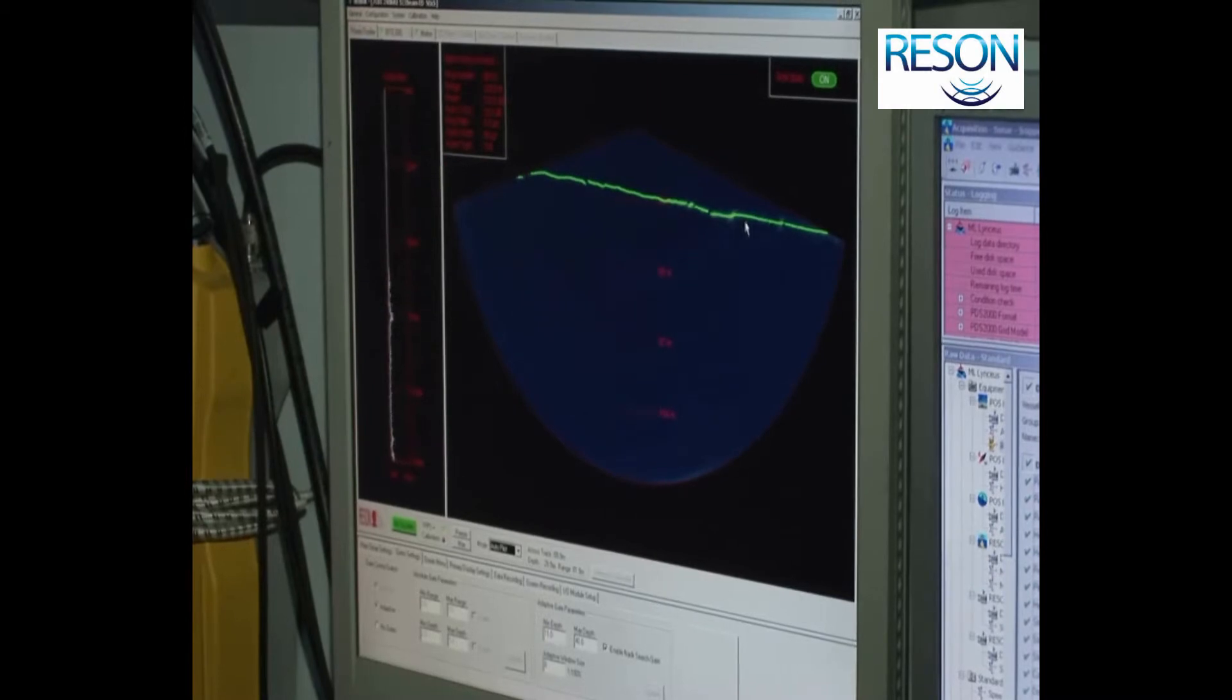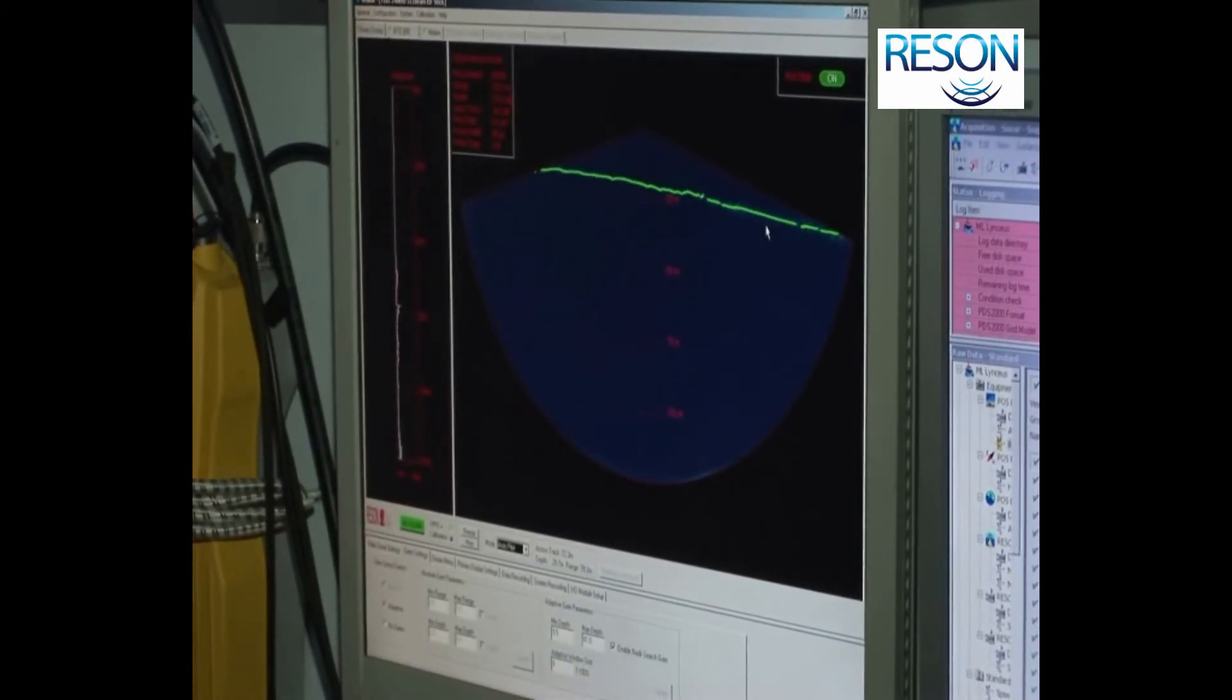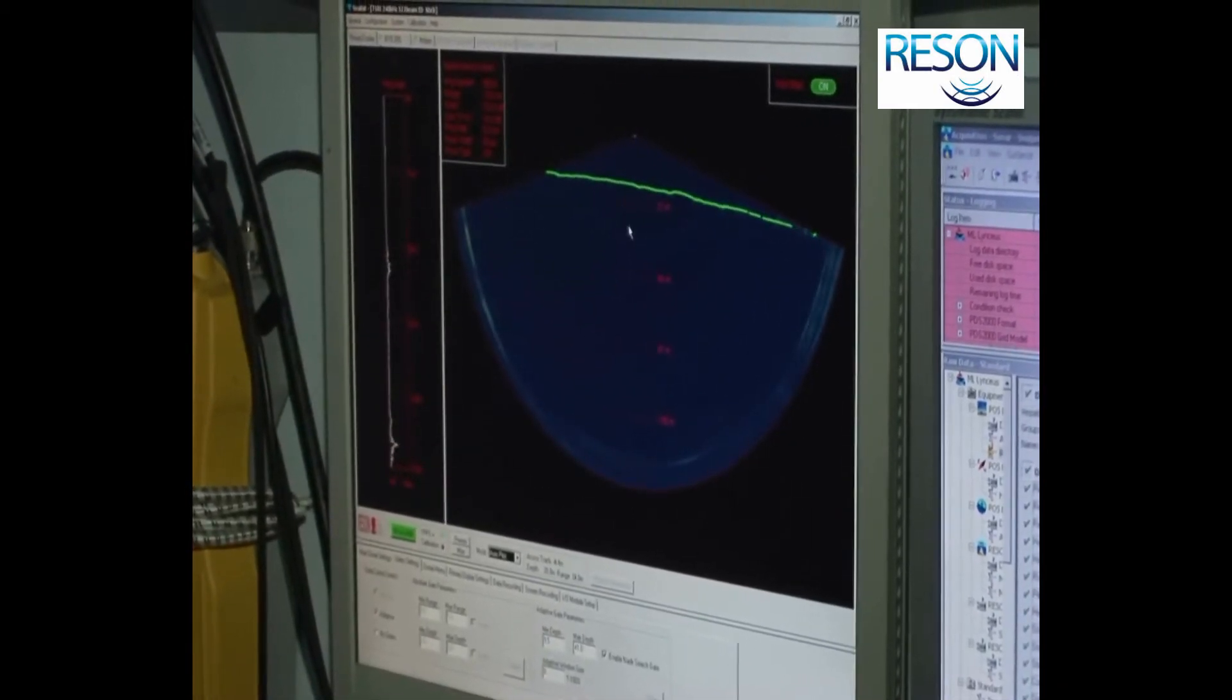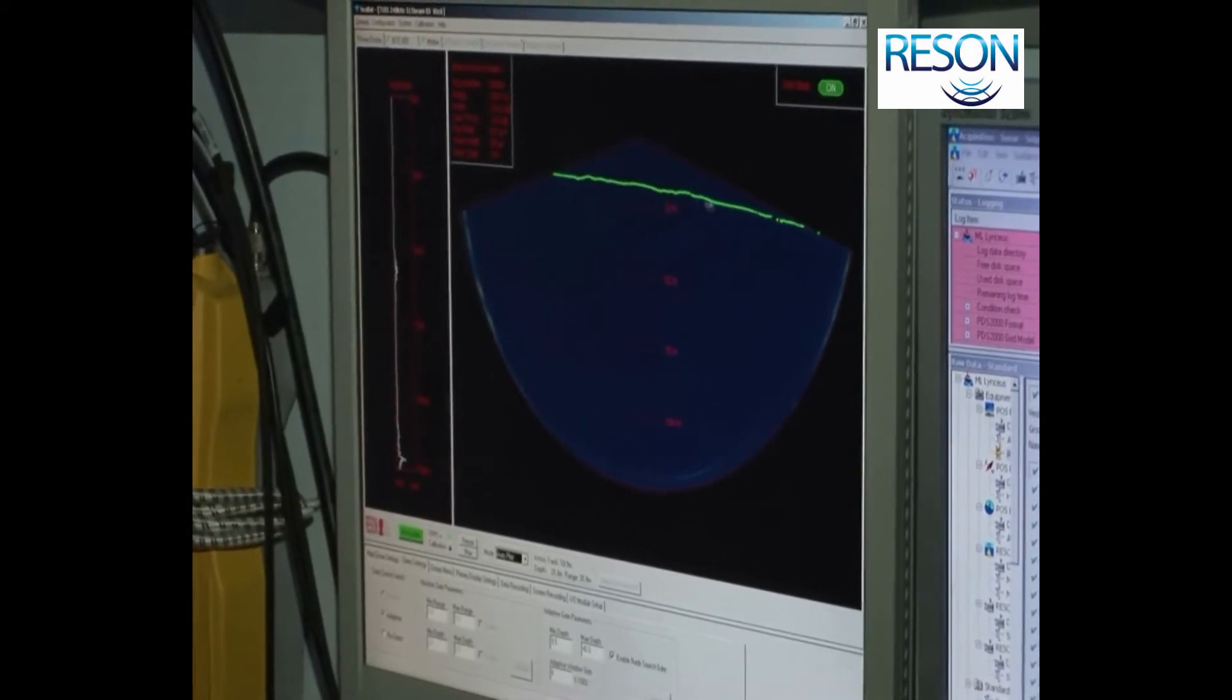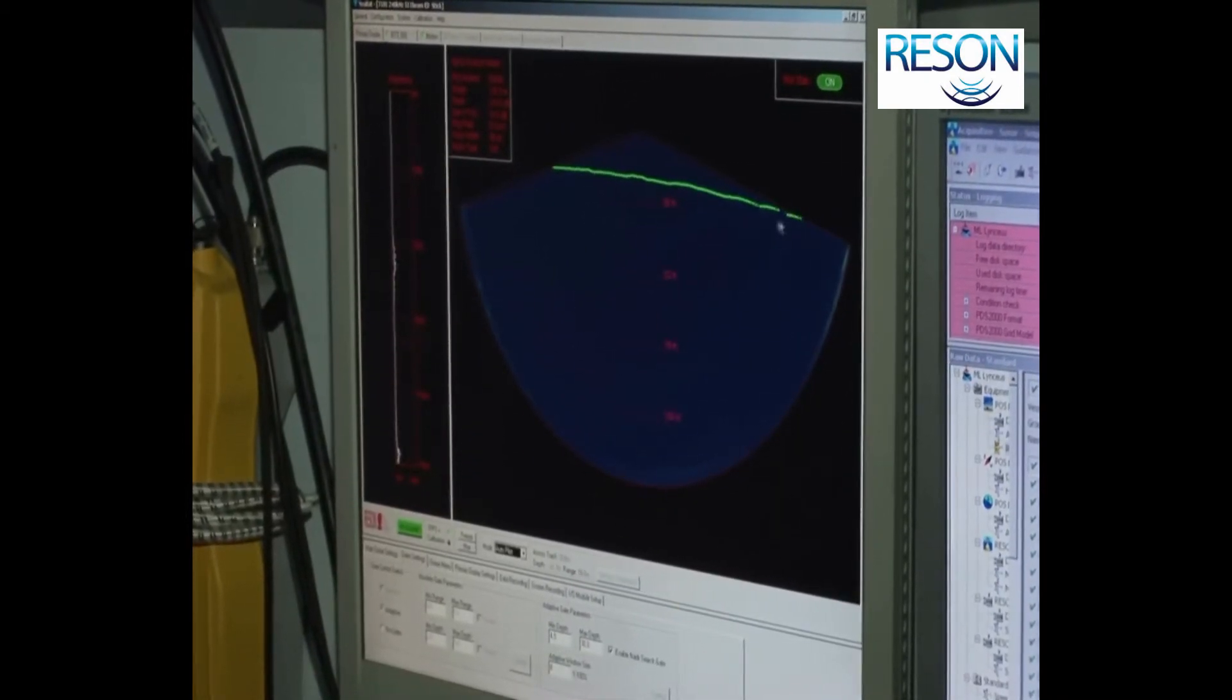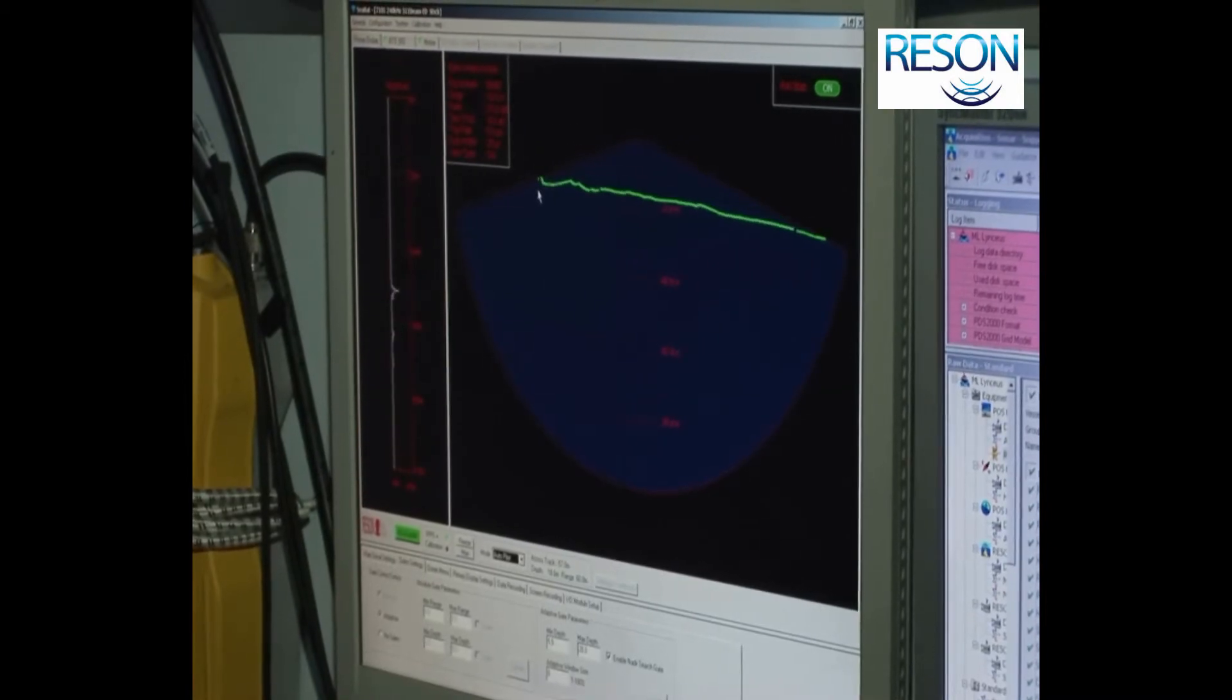You can see that we are still in 511 equidistant beam mode, so we have a full swath with uniform data density right the way across from one side to the other.